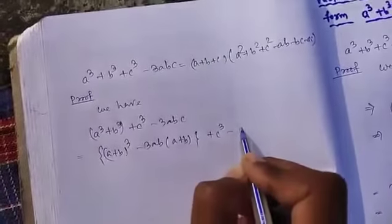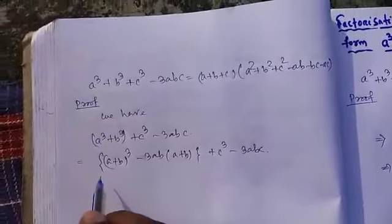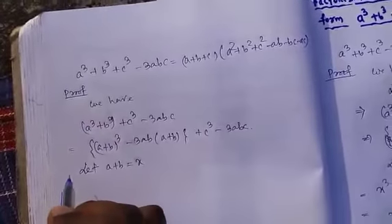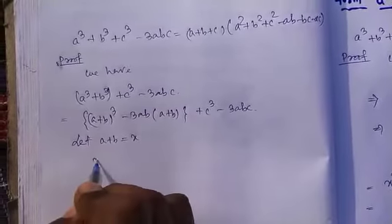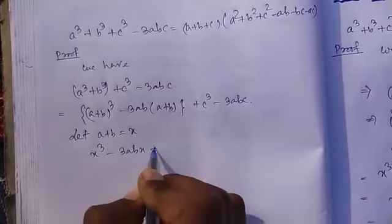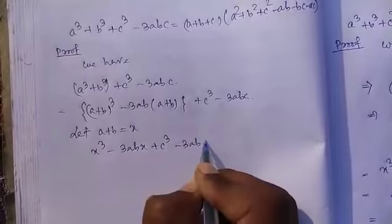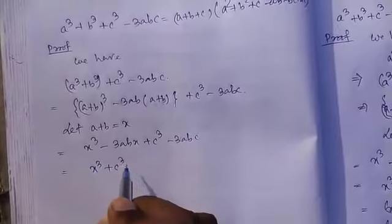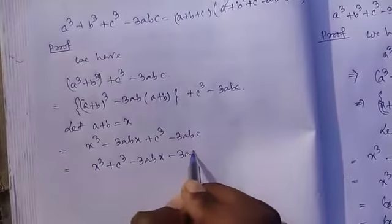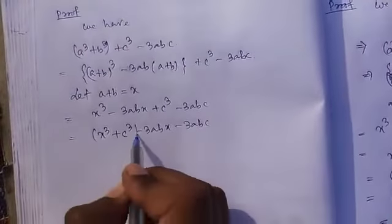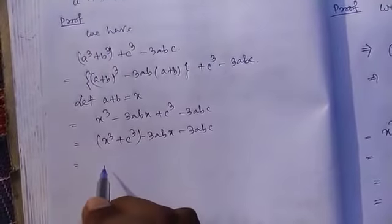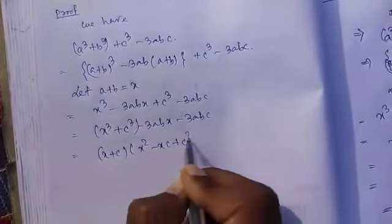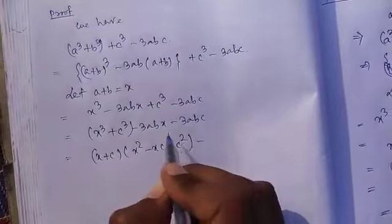Adding c³ - 3abc, let's take (a + b) as x, so the expression becomes x³ - 3abx + c³ - 3abc, which rearranges to x³ + c³ - 3abx - 3abc. We know the formula for x³ + c³, so it becomes (x + c)(x² - xc + c²).